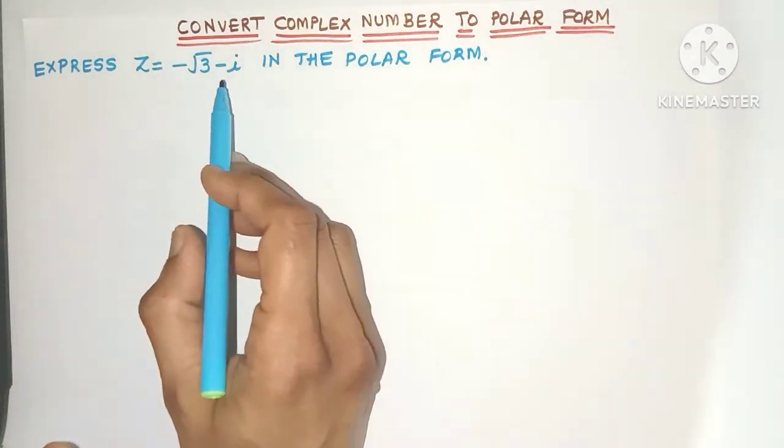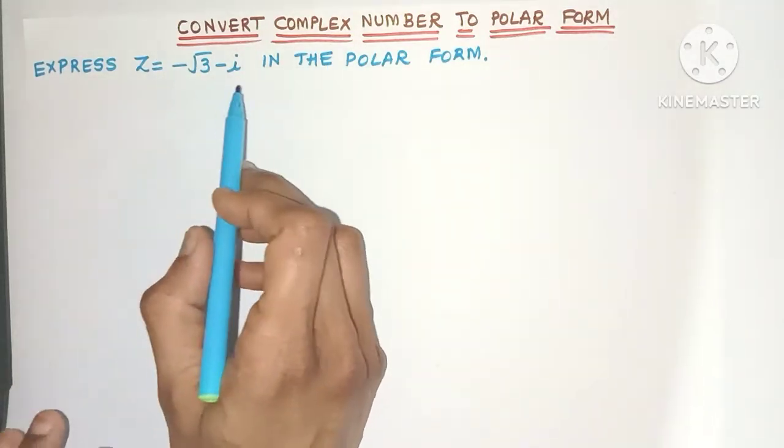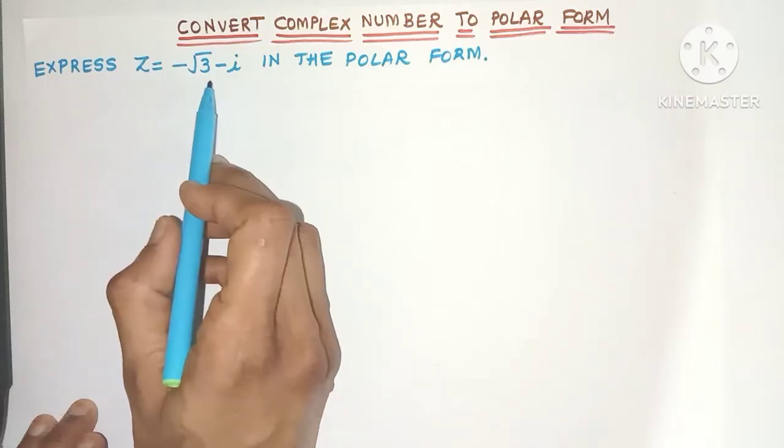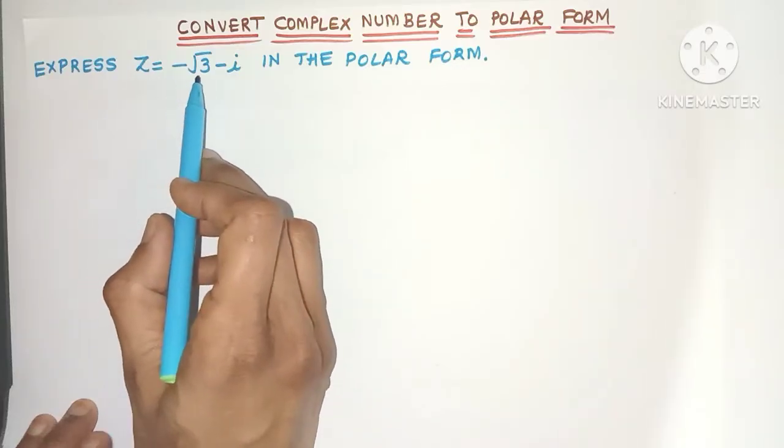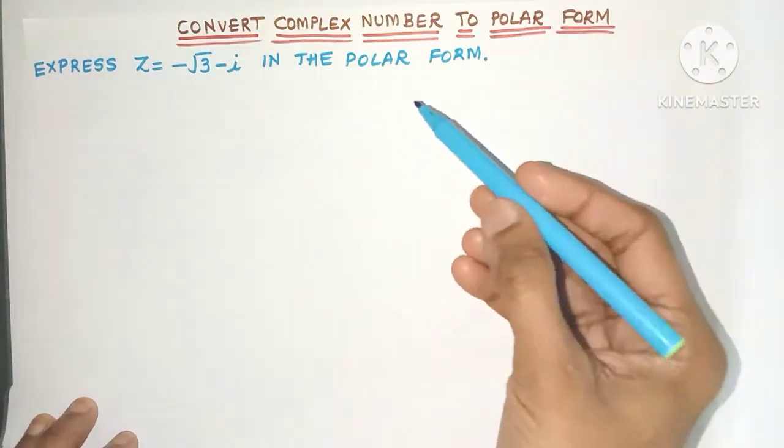Hello everyone. Today let's learn how to find the polar form of any complex number. So here is the complex number z = -√3 - i. We have to write it in the polar form.